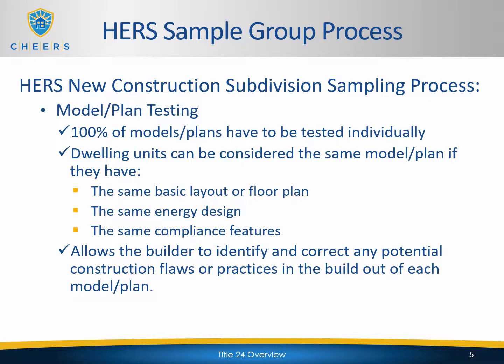If the builder only builds a certain number of plans — for example, if the builder has five different plans but in the beginning only builds three — then the initial three will have to be tested individually. And if they end up building the additional two, those will be tested individually as they come along. The reason we do this is because it allows the builder to identify and correct any potential construction flaws or practices in the build out of each model or plan.